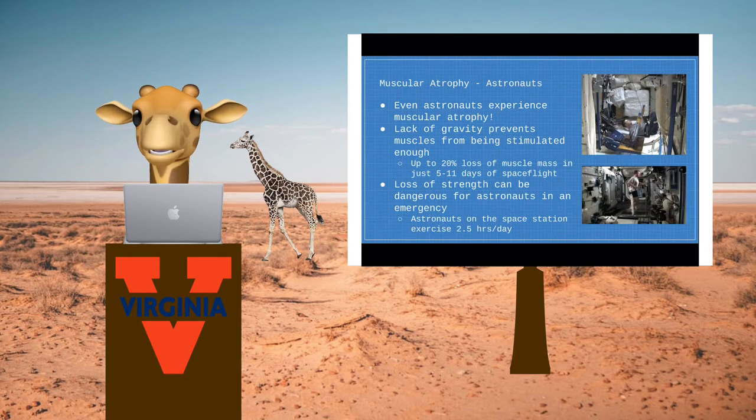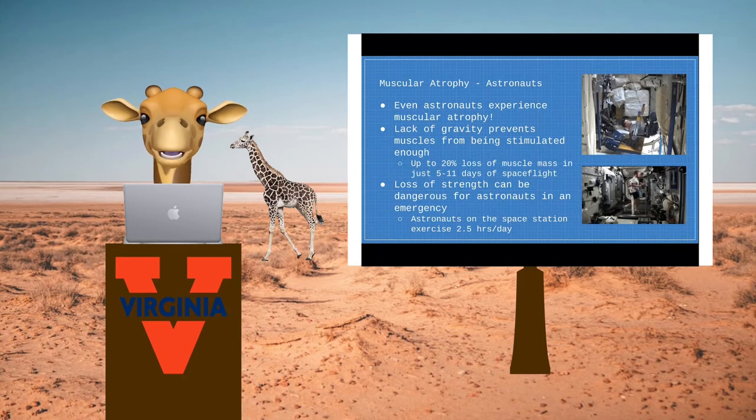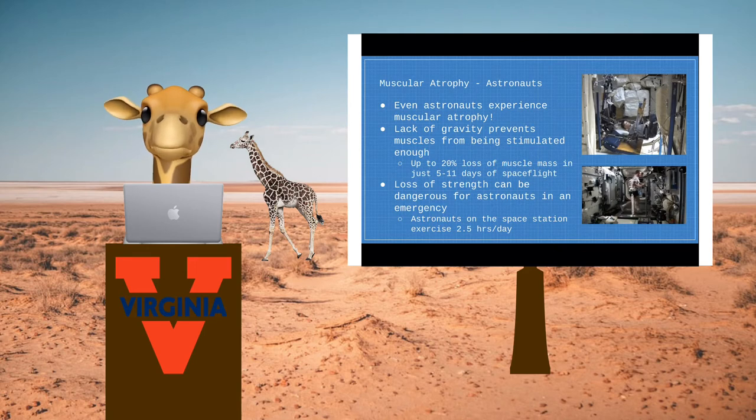Even astronauts experience muscular atrophy as they don't need to use their muscles very much without gravity up in space. In just 10 days, astronauts can lose up to 20 percent of their muscle mass.